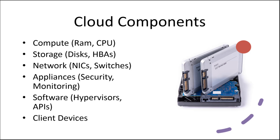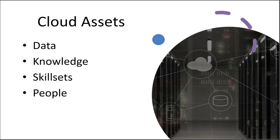Client devices can be anything from a virtual private network connection, tokens, or a HashiCorp device. When it comes to cloud assets, we want to be aware that cloud assets are not just physical — it's really more about the data, the knowledge, and skill sets and people. Data should be the most important asset. Knowledge is important because when we deploy our cloud services, if we have turnover, this could be a big deal, so documenting and identifying areas around your cloud assets is really important.